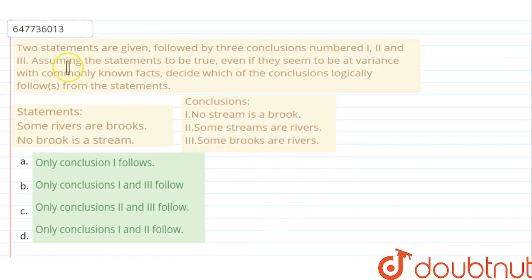Hello, so the question says: two statements are given, followed by three conclusions numbered 1, 2 and 3. Assuming the statements to be true, even if they seem to be at variance with commonly known facts, decide which of the conclusions logically follows from the statements.